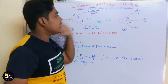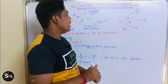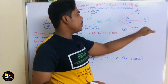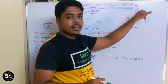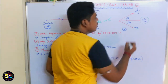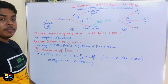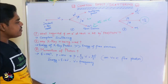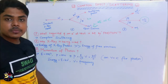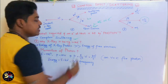In Compton scattering, the momentum changes. Momentum is equal to mv. This is the initial momentum of the first photon. This is the required electron momentum, and this is the velocity. The key question is: what happens if an electron at rest is hit by a photon? When the photon hits the electron at rest, this is what we call Compton scattering.